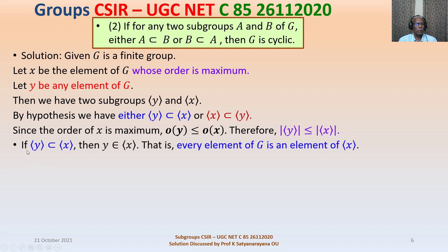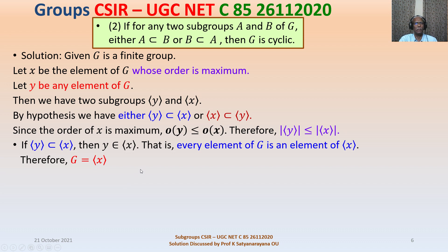Take the first case: if ⟨Y⟩ is contained in ⟨X⟩, then Y belongs to ⟨X⟩. Since Y was arbitrary, every element of G belongs to ⟨X⟩, meaning G is contained in ⟨X⟩. Therefore G equals ⟨X⟩, and thus G is cyclic.